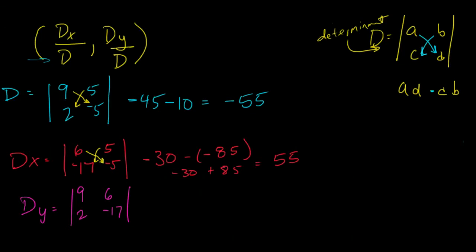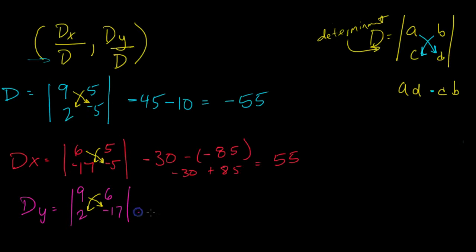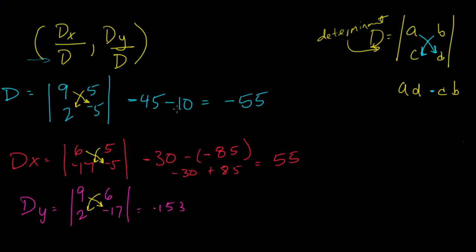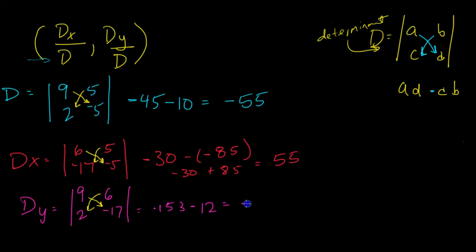And then for our d sub y, we're going to multiply these two numbers and then subtract those two numbers there. So 9 times 17 will give us 153, and that will be negative. And then from that we're going to subtract 6 times 2, which is 12. So negative 153 minus 12 is negative 165.